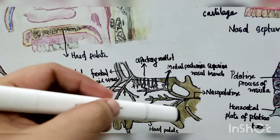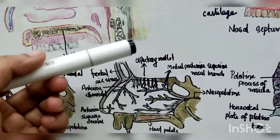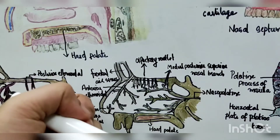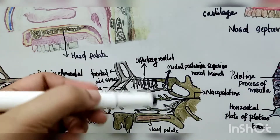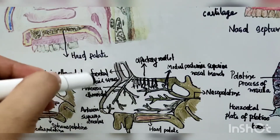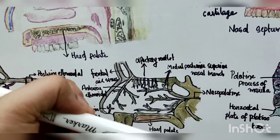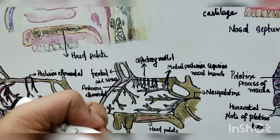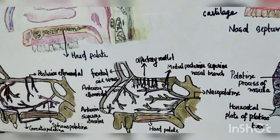For lymphatic drainage, the anterior half drains to the submandibular nodes and the posterior half drains into the retropharyngeal and deep cervical nodes. Today we discussed the nasal cavity — the roof, floor, medial and lateral walls, the nasal septum, blood supply, and nerve supply.